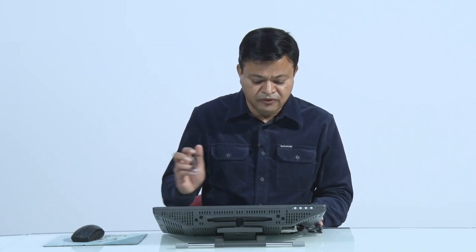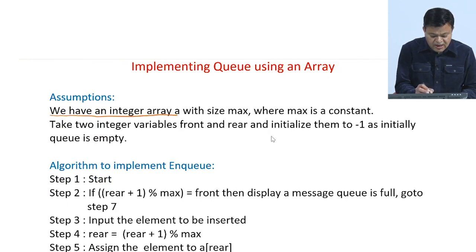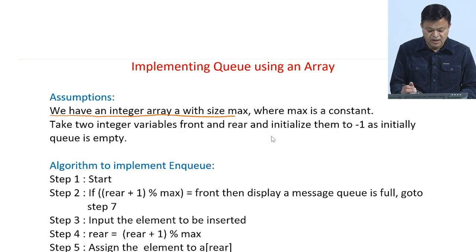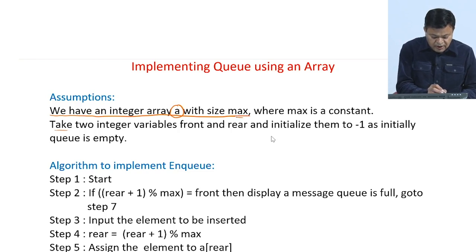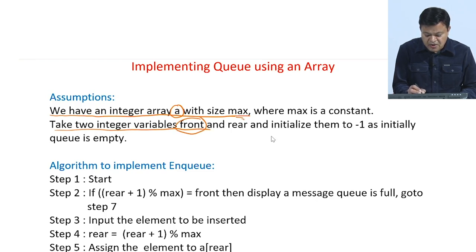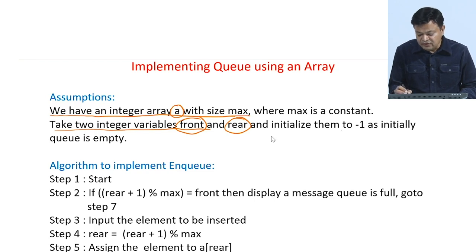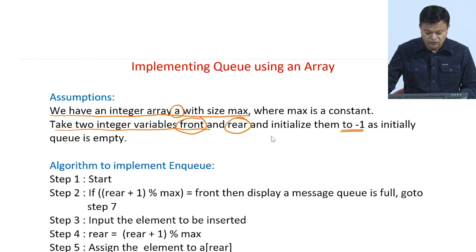Before that, we have certain assumptions. First, our array name is 'a' with size max, which will be decided by the programmer. This is called static memory allocation — memory is allocated when the program is compiled and the user cannot change the array size afterwards. We are also taking two integer variables, front and rear, and initializing them to minus 1, since initially our queue is empty.